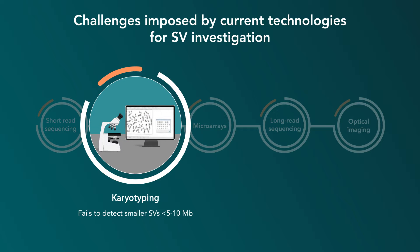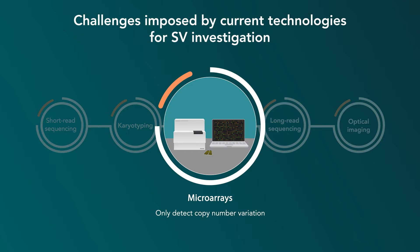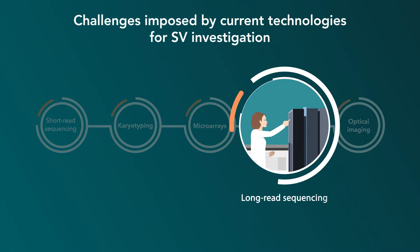Current karyotyping techniques fail to detect smaller variants less than 5 to 10 megabases. Microarrays can only detect copy number variations and rely on existing knowledge of the genomic sequence. Long-read approaches are cost-prohibitive and have a lower upper limit to the size of variants that can be detected, potentially missing larger variants.